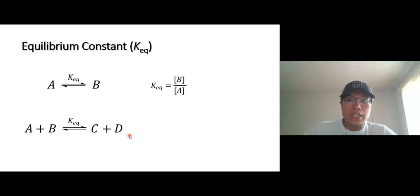If you have A plus B go to C plus D, you go concentration of C and D over concentration of reactant A and B. Now, in GenChem2, we talk about equilibrium, that all reactions are in equilibrium. But what we're interested in is the position of equilibrium.